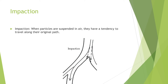Impaction: when particles are suspended in air they have a tendency to travel along the original path. When there's a bend in the airway — for example in your nose — many particles do not turn with the air but rather stick to the surface on the particle's original path. The likelihood of impaction depends on air velocity and the particle's mass. Typically, most particles greater than 10 micrometers in aerodynamic diameter are deposited in the nose or throat and cannot penetrate to the lower or deeper tissues of the respiratory tract.